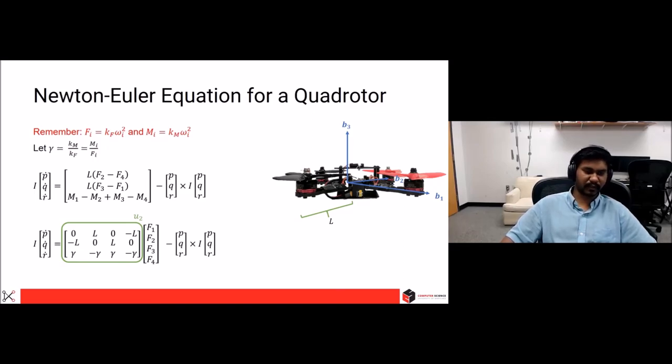And we can, taking the last equation from the previous slides, we can write it in terms of gamma here, as shown here. So this is again the same thing as before, it's U2, which is the second control input, which we'll be controlling in the later slides.